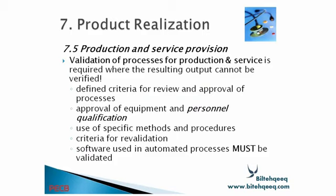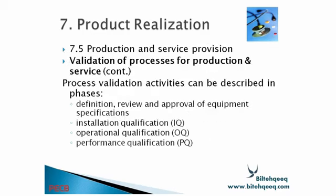Validation of processes for production and service is required where resulting output cannot be verified. In some processes, you are unable to verify the output during the process, so for these kinds of processes you have to perform validation. You must define criteria for review and approval of the process, approval of equipment and personnel qualifications, use of specific methods and procedures, criteria for re-validation, and software used in automated processes must be validated. Process validation activities can be described in phases: definition, review and approval of equipment specifications, installation qualification, operational qualification, and performance qualification.